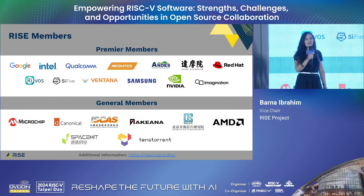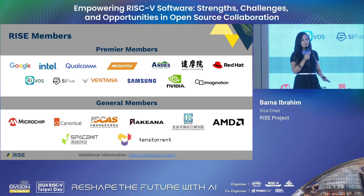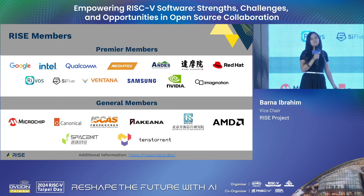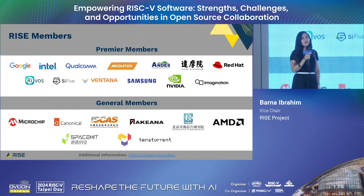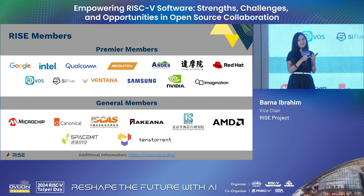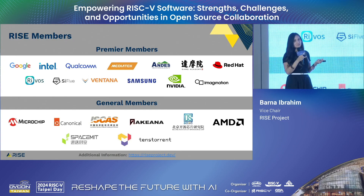Our members include mature industry SoC vendors like MediaTek and Qualcomm, RISC-V startups like Rivos, Tenstorrent, and Ventana, platform owners like Google getting Android ready, and distros like Canonical and Red Hat. These companies are joining forces in two ways: first, getting our engineers together to talk and collaborate on what problems need to be solved; second, funding specific projects that none of the members are currently working on but that we believe are important.